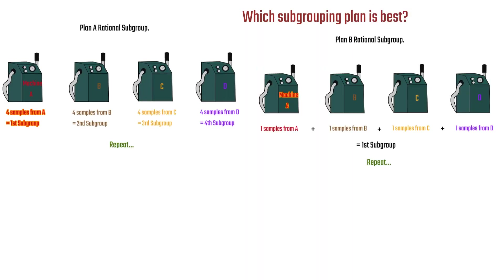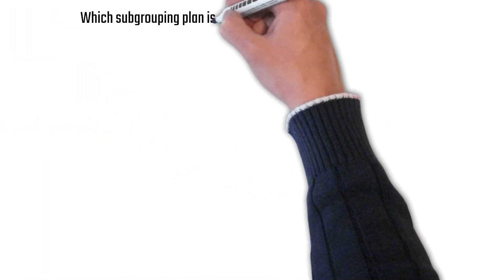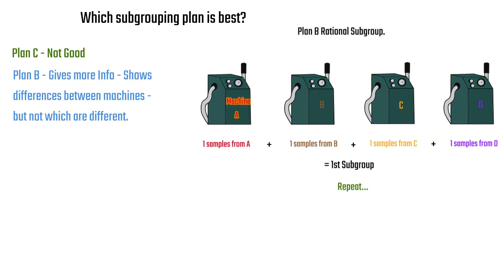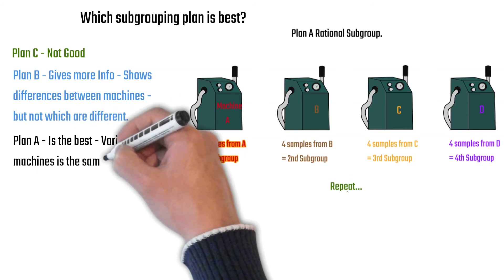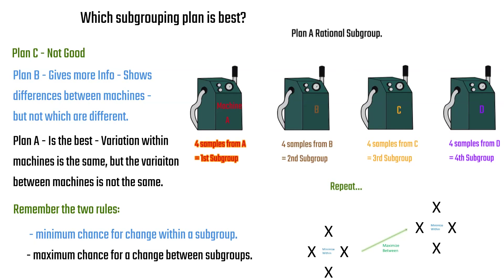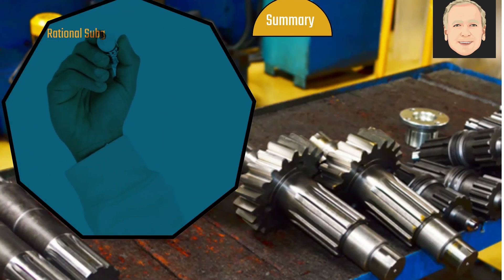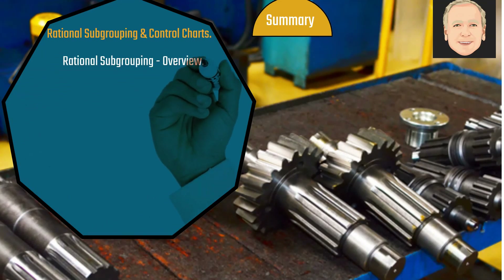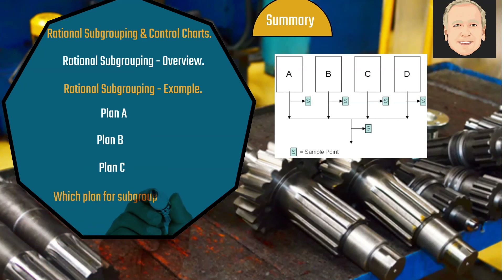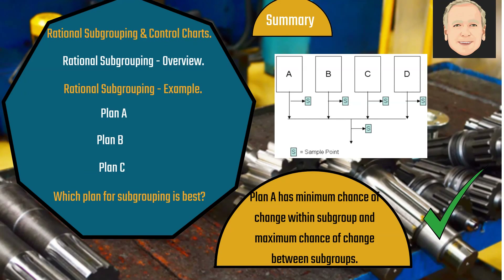So which subgrouping plan is best — Plan A, where we take a subgroup from one machine; Plan B, where a subgroup contains one from each machine; or Plan C, from the blended stream? Plan C is not that good — it doesn't give us much information about what's going on. Plan B gives us more information — it shows differences between machines, but not which ones are different. Plan A is the best. It shows the variation within machines is the same, but the variation between machines is not the same, and it showed how A and B were at different averages than C and D. Plan A had the minimum chance for change within a subgroup and the maximum chance of change between subgroups.